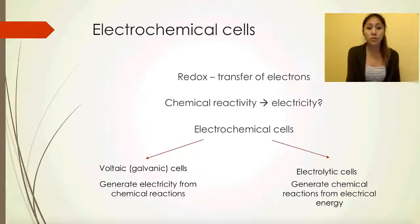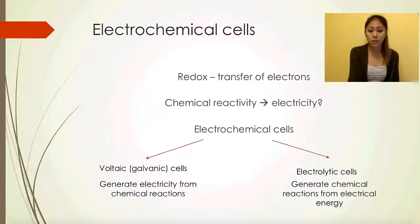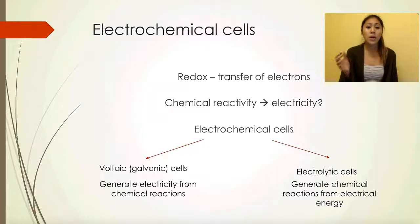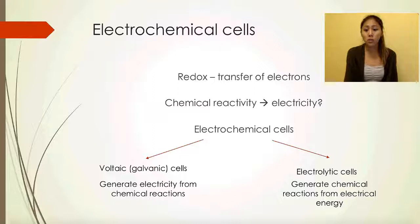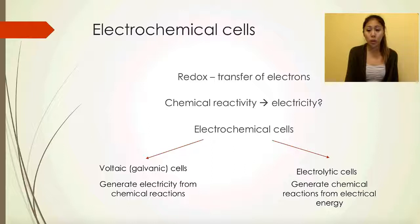From the previous lesson, we learned that voltaic galvanic cells generate electricity from chemical reactions. Electrolytic cells, on the other hand, generate chemical reactions from electrical energy — you provide electrical energy in order to drive a redox reaction. That's what we're going to look at today.